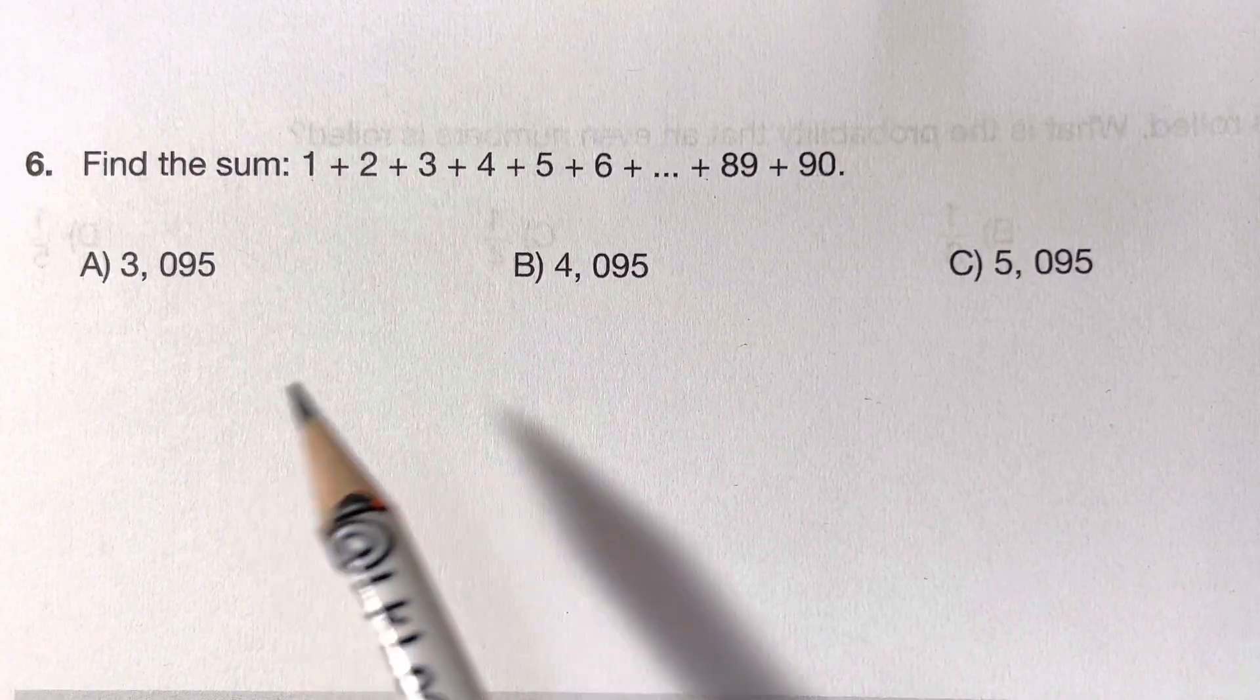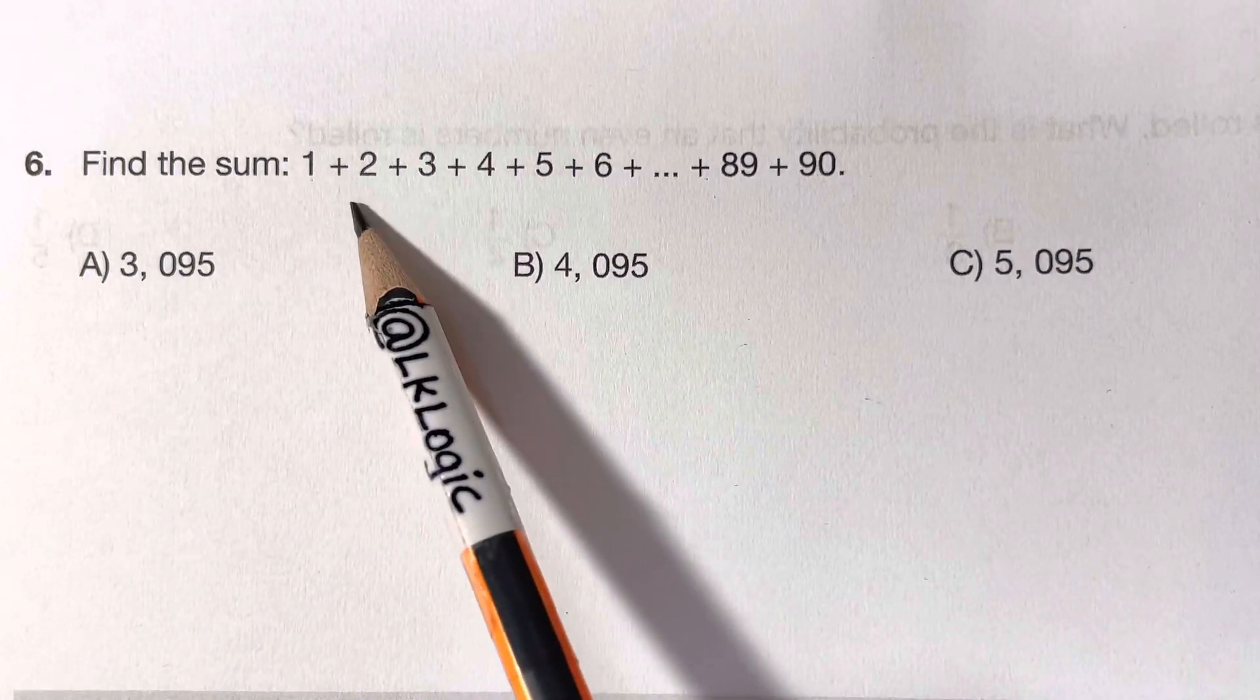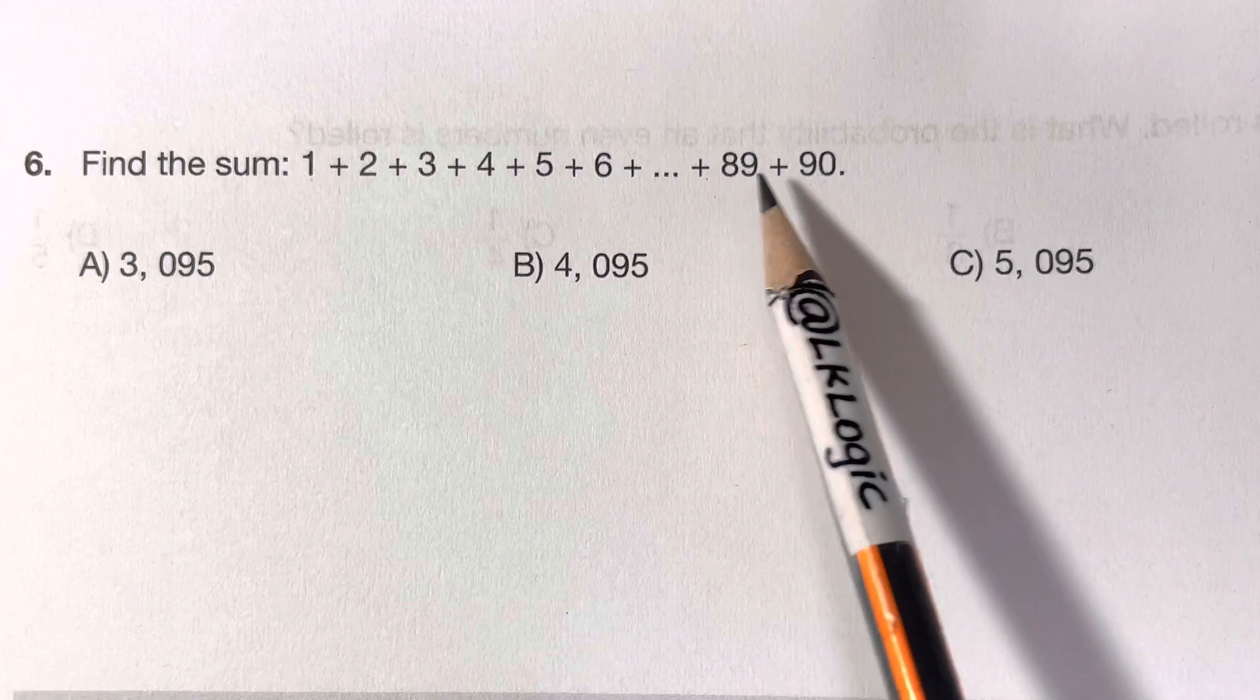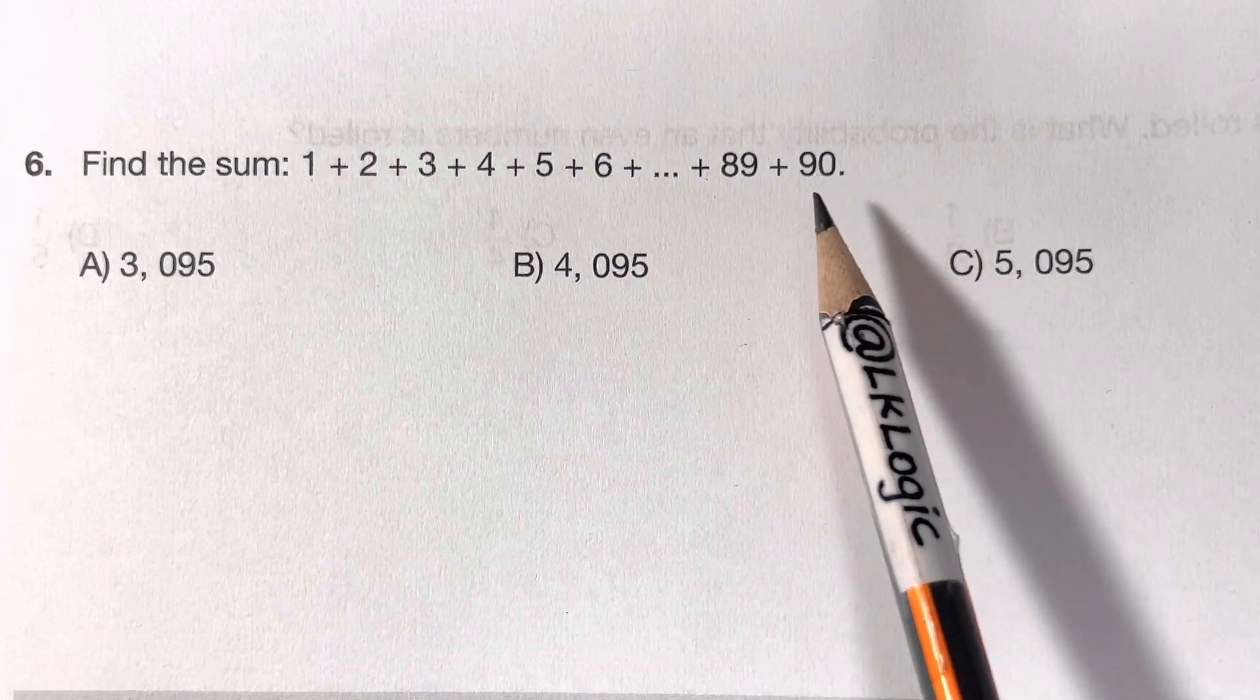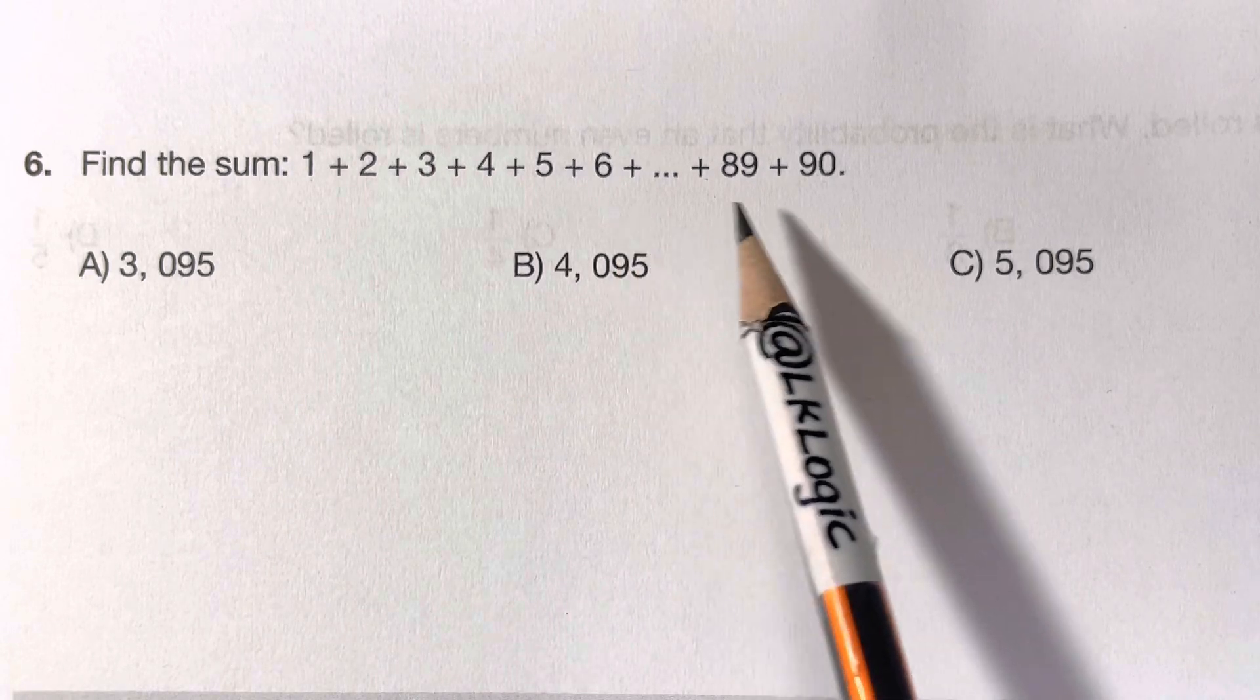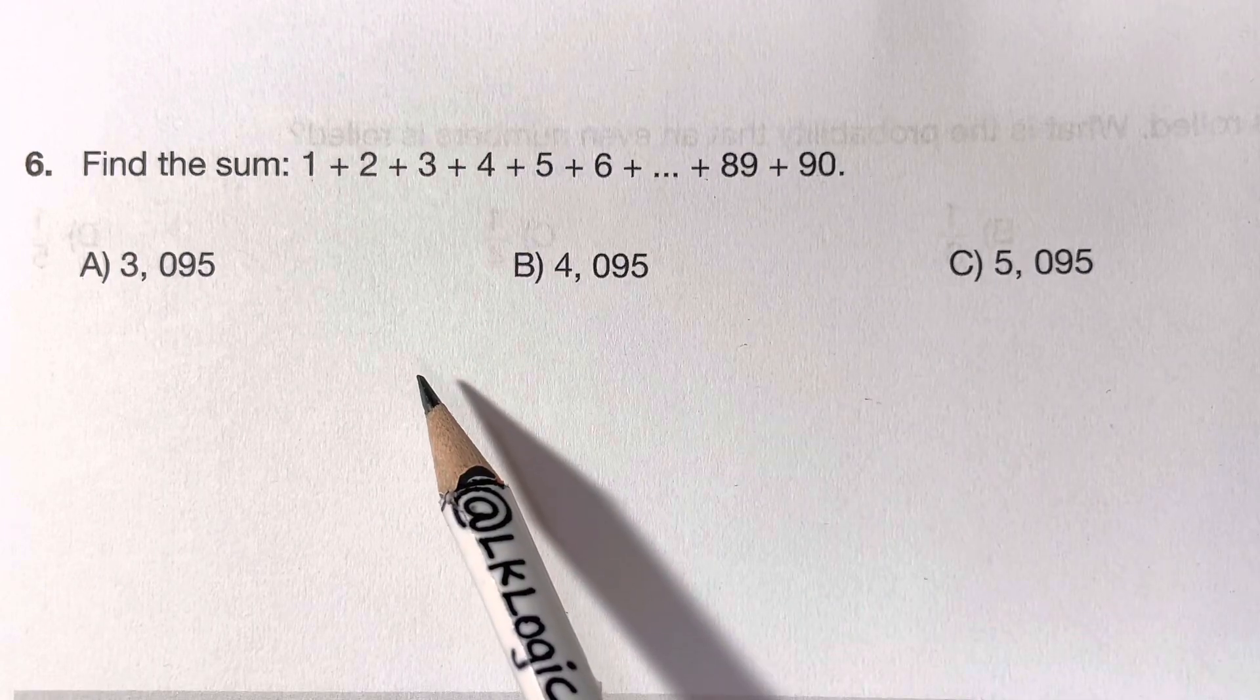Hi everyone, in this Math Olympiad question we are going to find the sum of 1 + 2 + 3 + 4 + 5 + 6 + ... + 89 + 90. Even with the calculator, this problem will take you forever, a lot of time, so we'll find a trick instead.